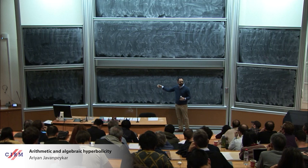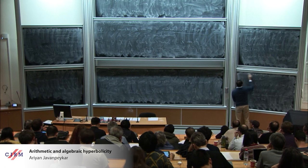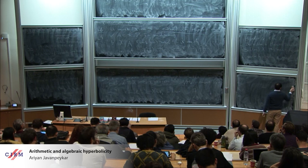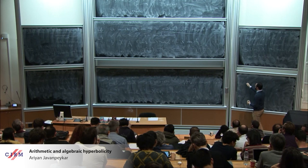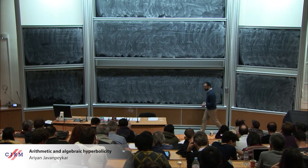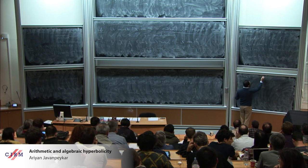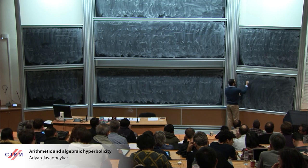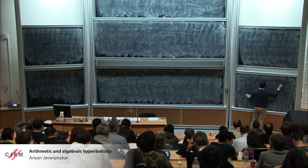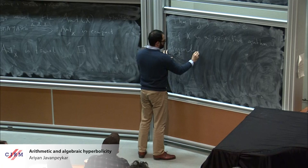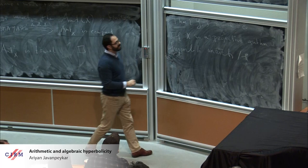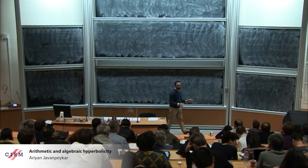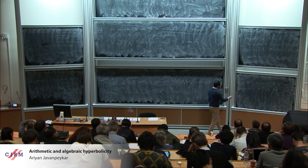What if I replace 'Brody hyperbolic' by 'arithmetically hyperbolic'? If I believe Lang's conjectures, the same statement should be true. The first main result is that if X is a projective variety which is arithmetically hyperbolic over any algebraically closed field of characteristic zero, then its automorphism group is finite.